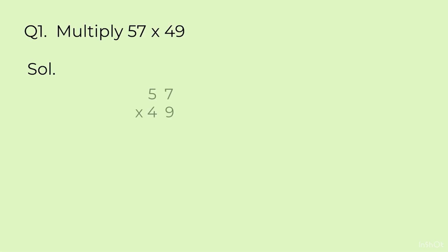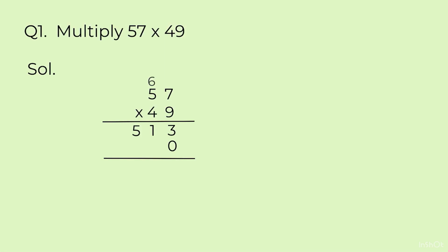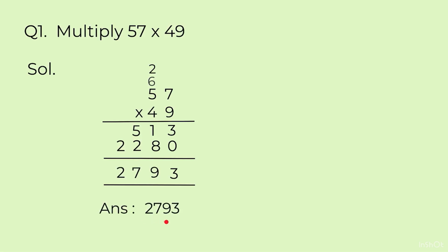The first one was 57 × 49. We start by multiplying 9 with 57: 9 sevens are 63, carry 6, write 3. Then 9 fives are 45, plus 6 is 51. Next we put one zero because we are multiplying with 4 tens. Then 4 sevens are 28, carry 2, write 8. 4 fives are 20, plus 2 is 22. Now adding: 3+0=3, 1+8=9, 5+2=7, and 2. Our answer is 2793.